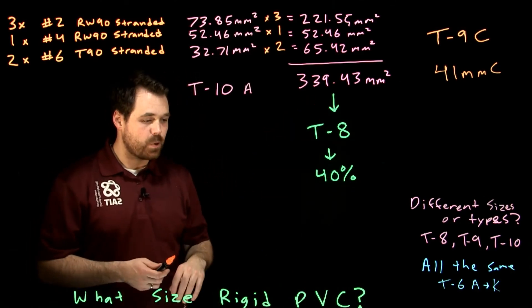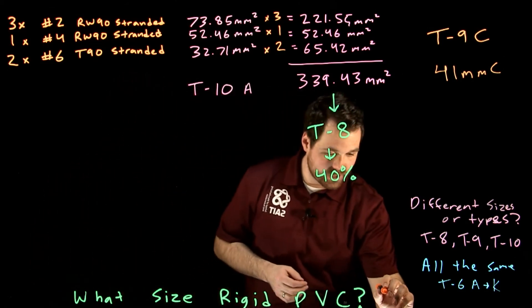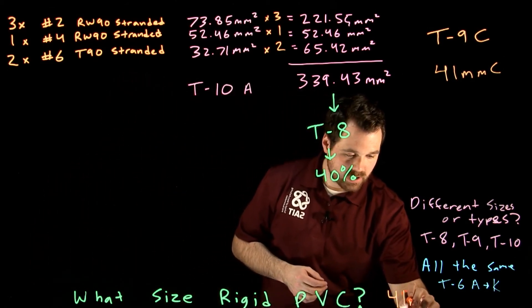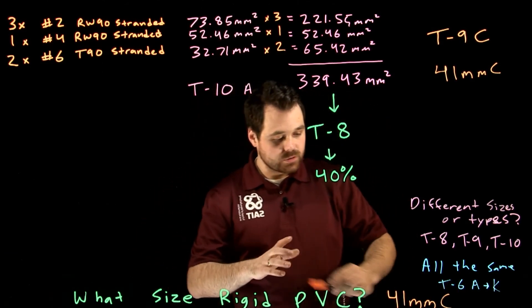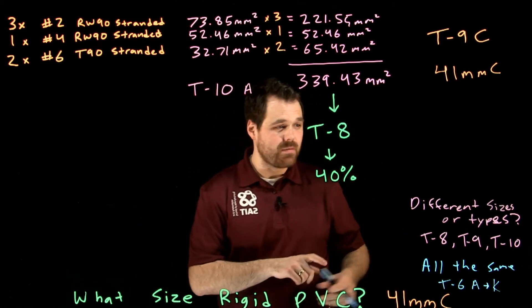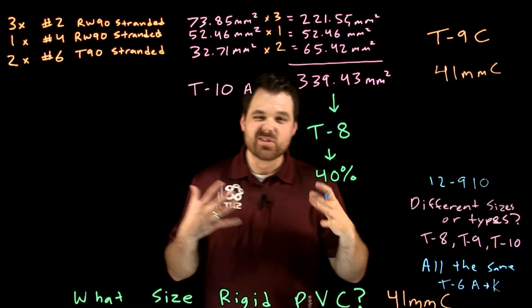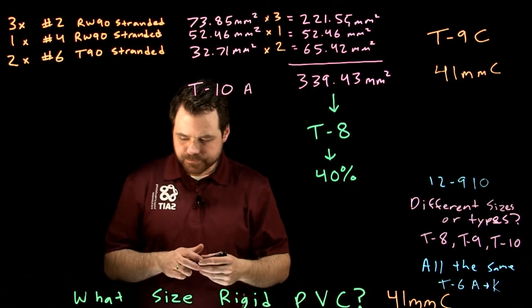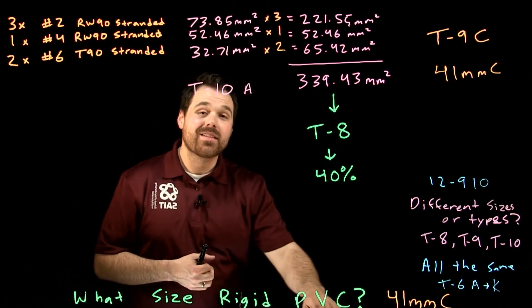So we have to use that forty one millimeter conduit. So, at the end of the day, we are going to have to get a forty one millimeter trade size conduit. So, just a reminder, all these rules come from section twelve wiring methods. Twelve, dash nine, ten is the rule that we're following here. Check out my other videos for some other examples. Thanks for watching.